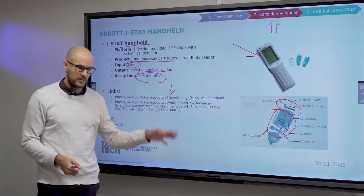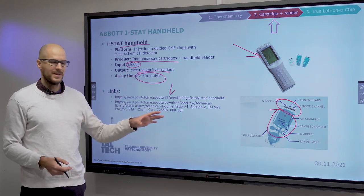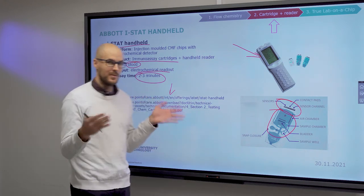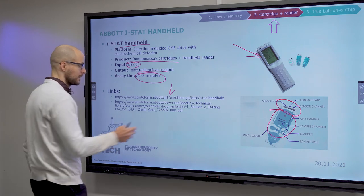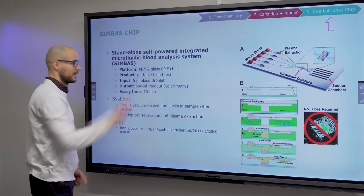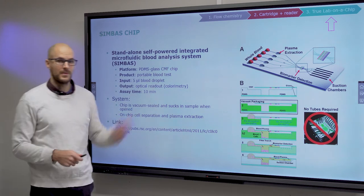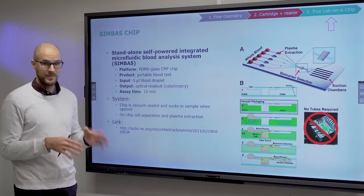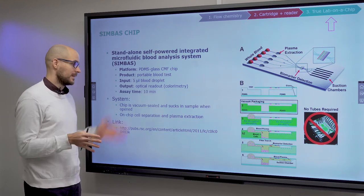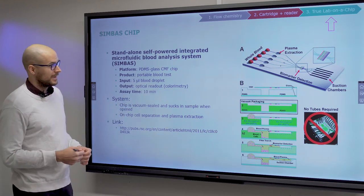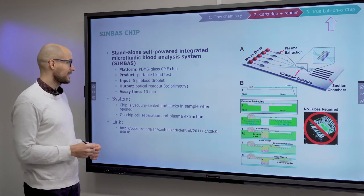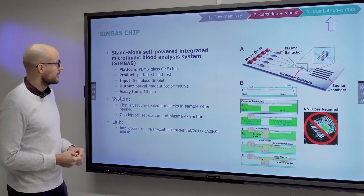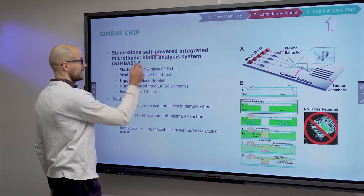Unfortunately, with all of these commercial devices the insides are really scarcely discussed, so I'm not really able to show you what's on the inside. This one, however, is from research, so you can also see what's inside. It's the so-called Simbus chip — a true lab-on-a-chip type device that doesn't need any instrumentation whatsoever. This is a publication from 2010 and I have not yet seen any commercial product, but that doesn't mean it doesn't exist. It is self-powered and it is for blood analysis.